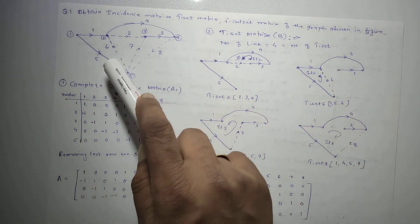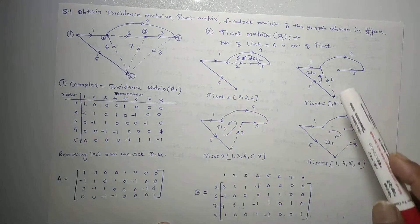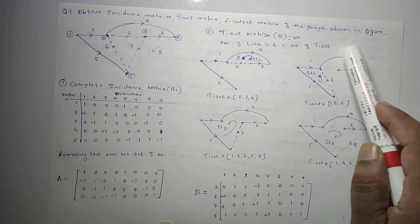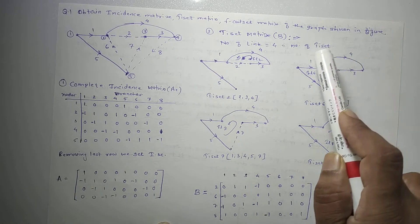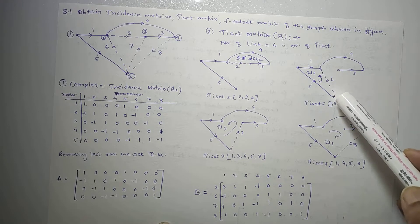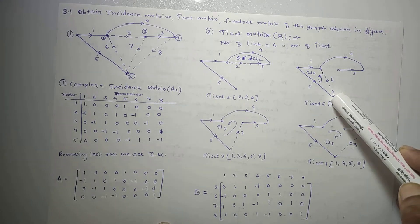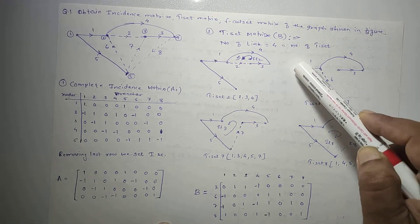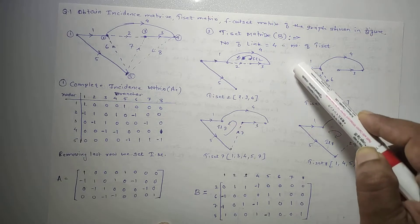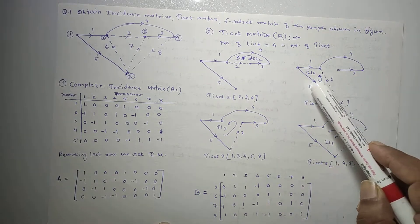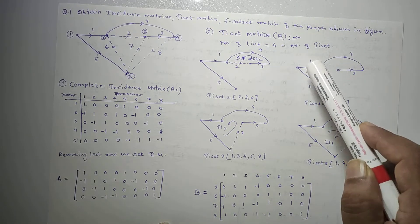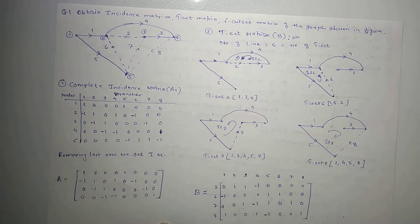Next is tie set 6. Drawing the tree and placing link number 6 forms a loop. This loop — called tie set 6 — is formed by branches 1, 5, and 6.